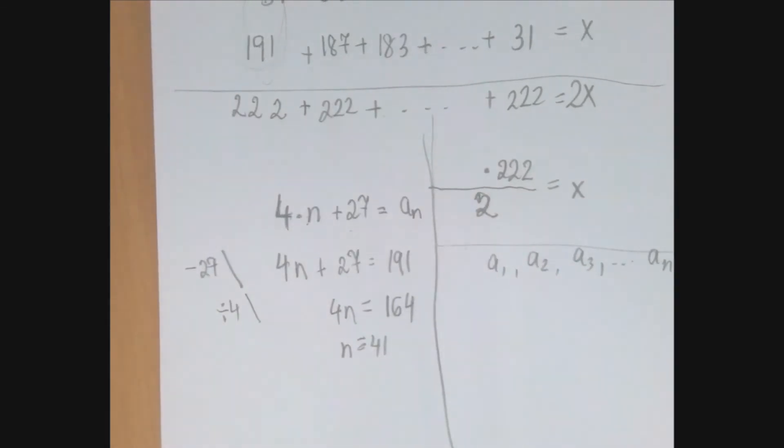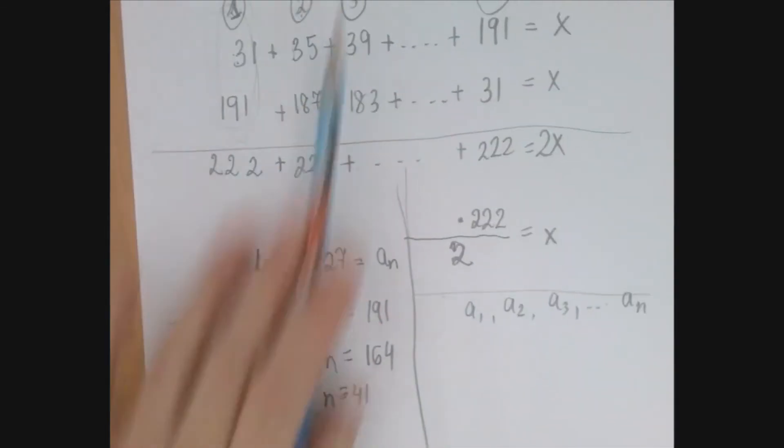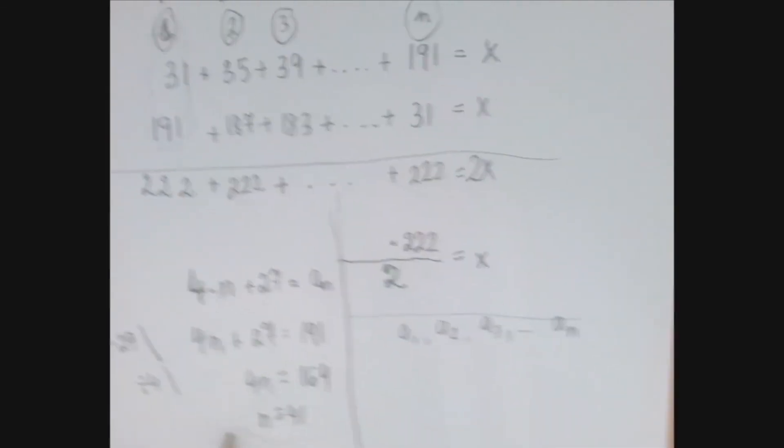Now usually when we get x equals this, n equals that, that means this is the end of the problem and we can start celebrating, but it's always good to read the question. We are asked to find a number of seats in a theater. 41 is a very, very small theater. Because what we found here is just the number of columns, right?